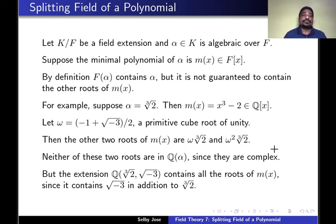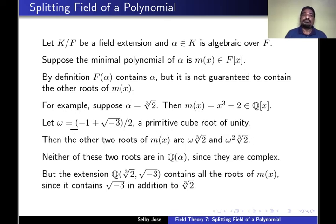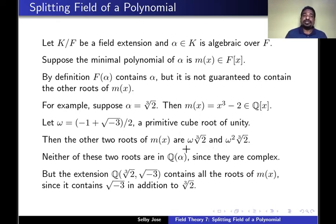For example, let alpha equal the cube root of 2. The minimal polynomial of the cube root of 2 is x³ minus 2. Let omega be the primitive cube root of unity, which we can write as (-1 + √(-3))/2. The other two roots of x³ - 2 are omega·∛2 and omega²·∛2. Because omega is a complex number, neither omega·∛2 nor omega²·∛2 are in Q(alpha).